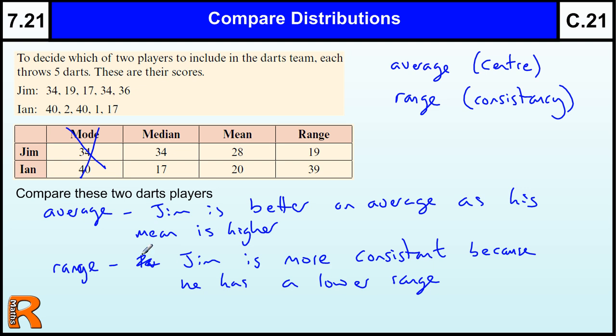And that's all you have to do with these questions. You're usually asked to compare two things, give two comparisons: one will be the measure of the average and two will be how widely spread they are or the range.